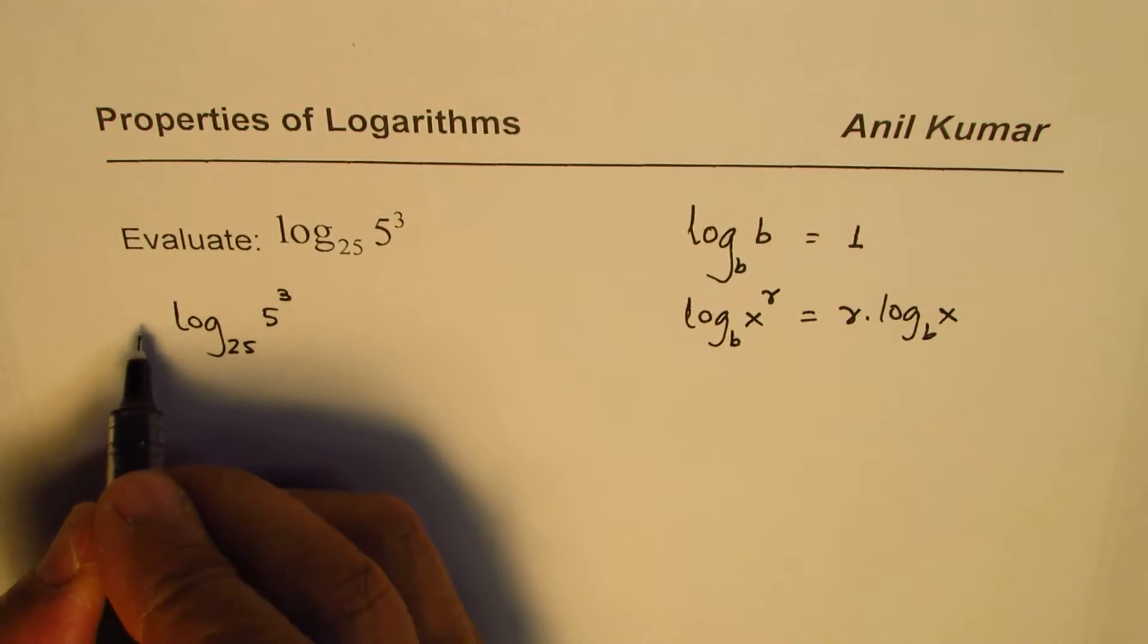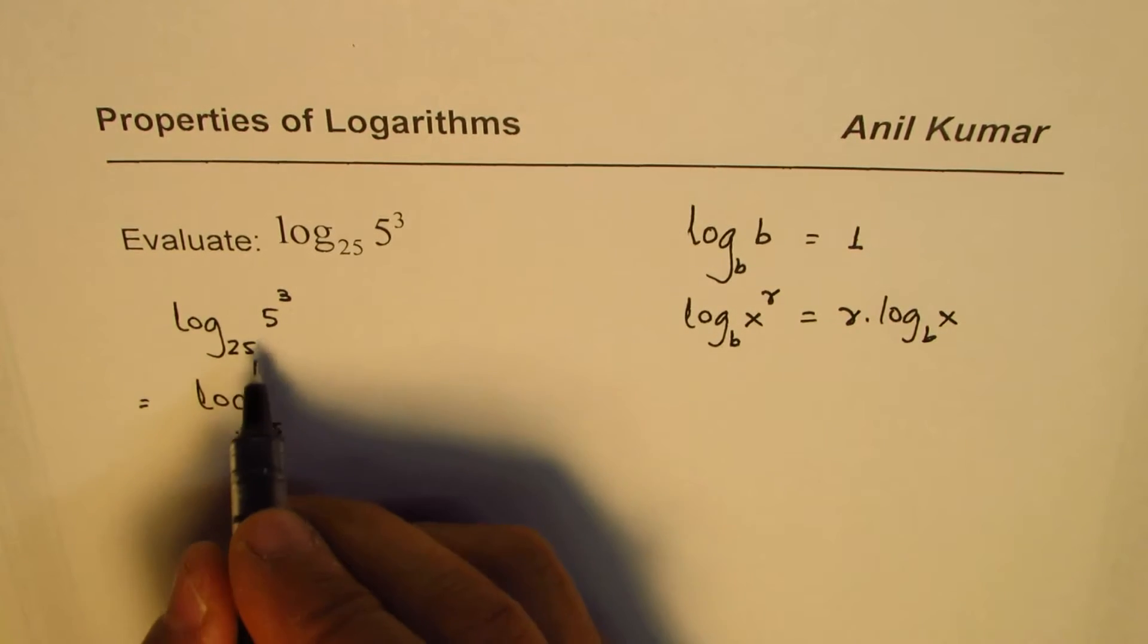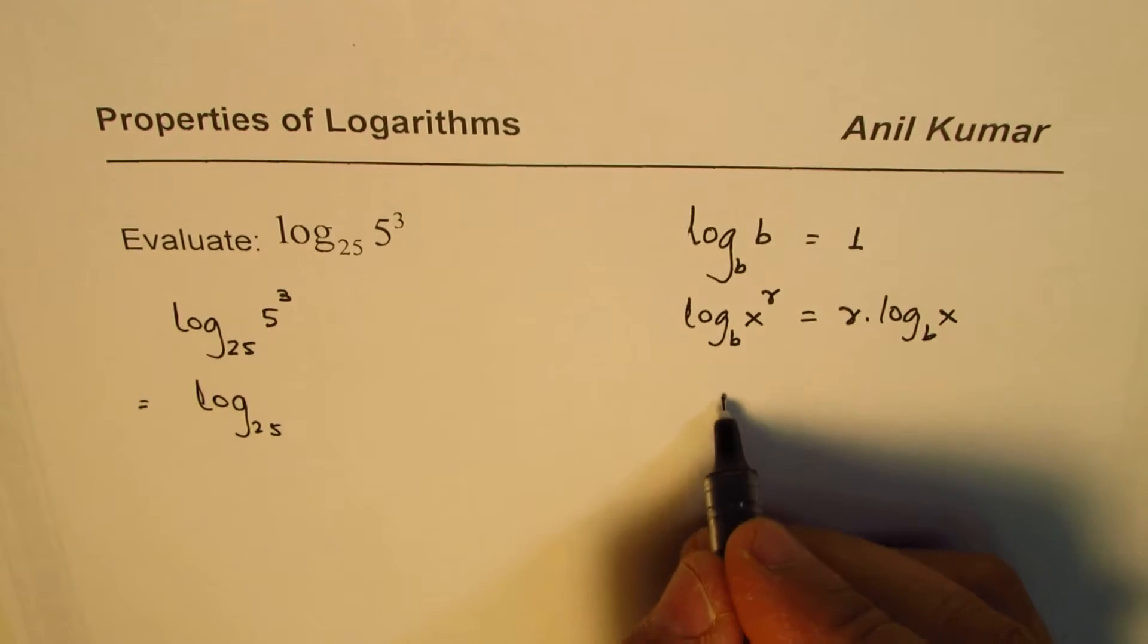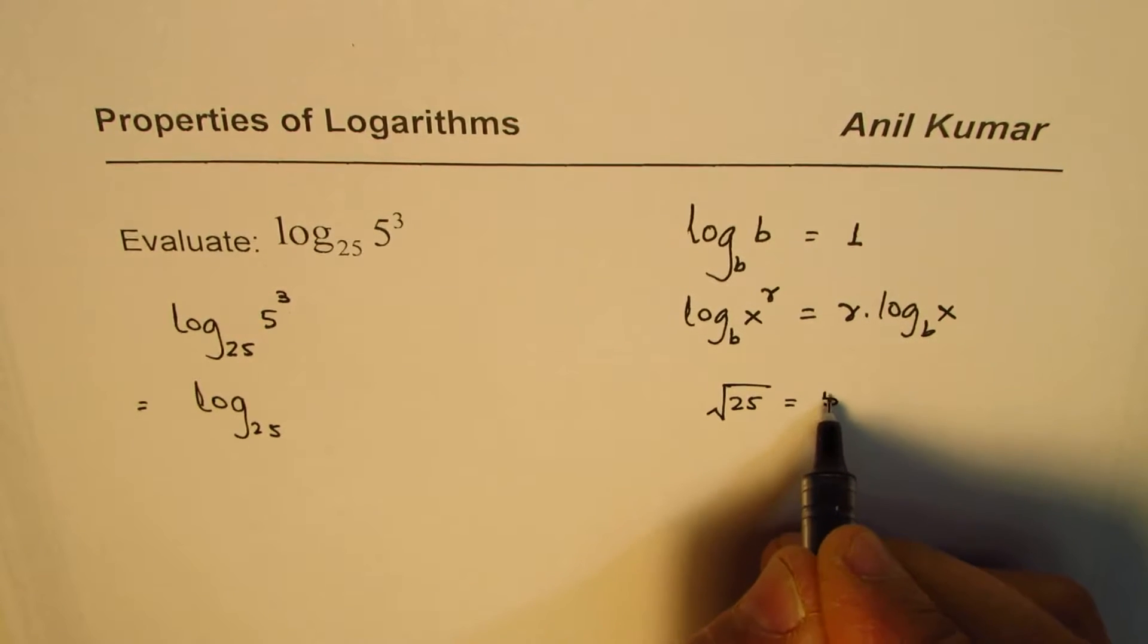So the idea here is to write 5 as 25. We'll write log to the base 25. Now how is 5 related to 25? You know square root of 25 is equal to 5.